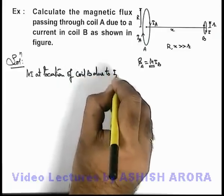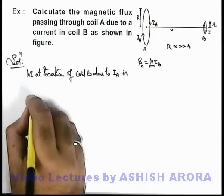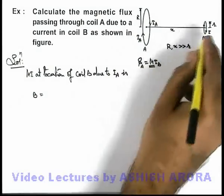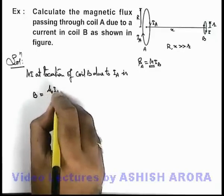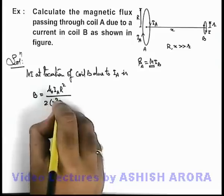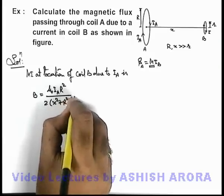Due to this current i_A, this magnetic induction B due to the first coil at the location of second coil we can write as μ₀ i_A R² / 2(x² + R²)^(3/2).